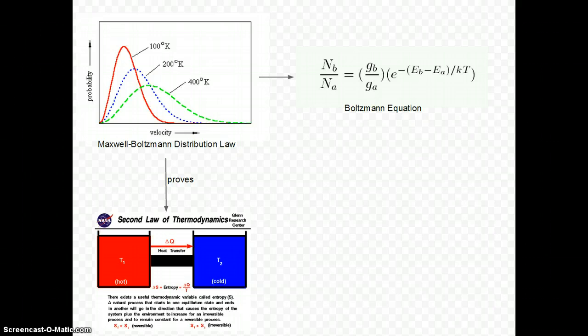Through his proof he came up with a Maxwell-Boltzmann distribution law which states that the average amount of energy involved in each different direction of motion of an atom is the same. From that he derived the Boltzmann equation.